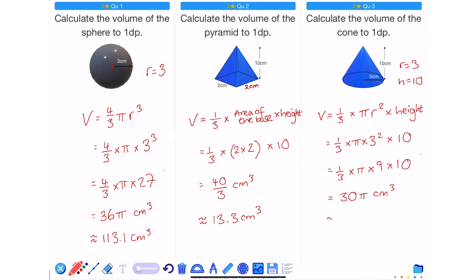Grabbing a calculator and rounding to one decimal place gives me 94.2 cm cubed.